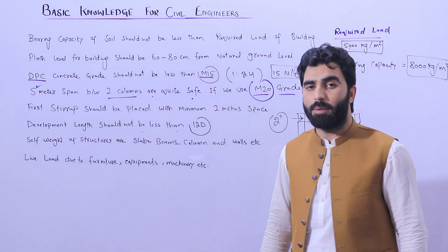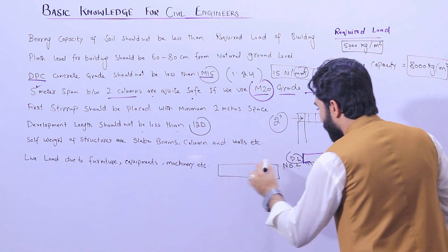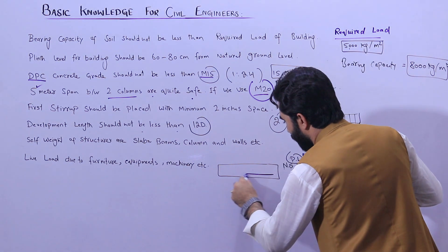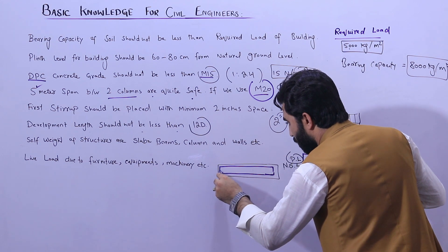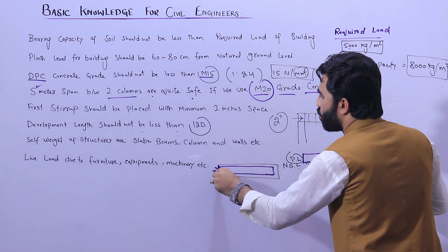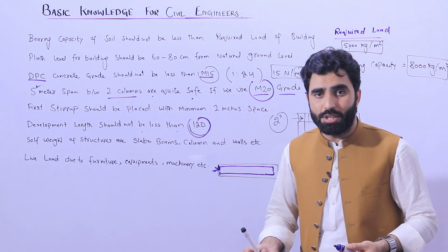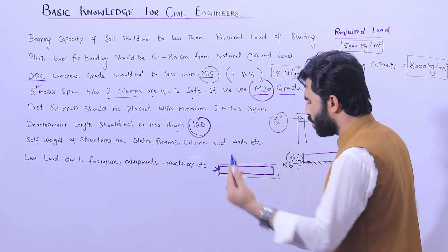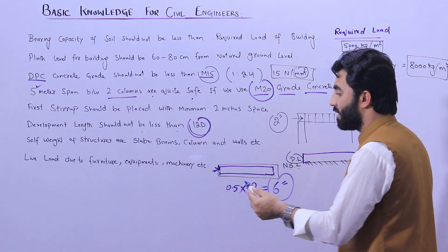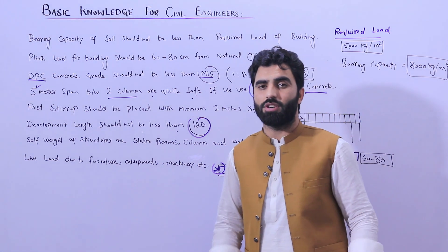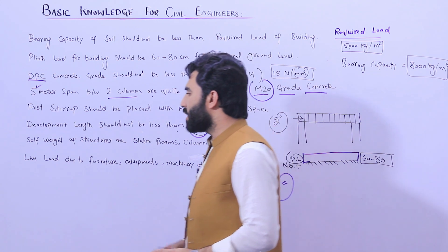Development length should not be less than 12d. Development length is provided in a beam at the end of the beam. The longitudinal steel bars bend — one going upward and one going downward — this is called development length. It should not be less than 12d, where d is the diameter of the steel rod. For example, if the diameter is 12 millimeters, then 12 × 12 = 144 mm, which is approximately 6 inches. So development length should not be less than 6 inches for a 12 mm diameter rod.